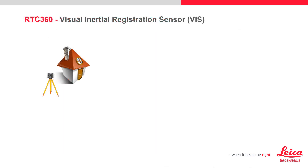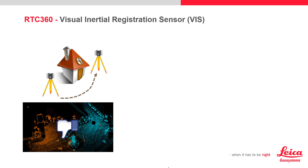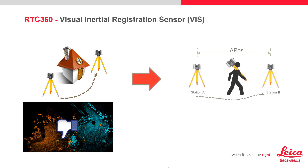Let's use this illustration to review what Viz is providing. When scanning without Viz, the user would take a scan, move the instrument, and capture a scan again. When these are put into the processing software, the two positions would be in different locations with different rotations — not too optimal. With the Viz system activated, there will be a delta pose calculated with the IMU and the cameras.